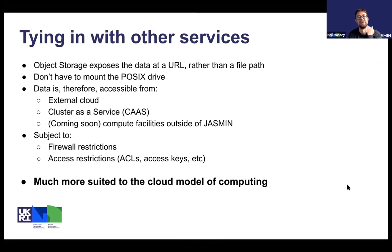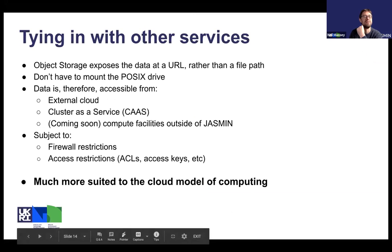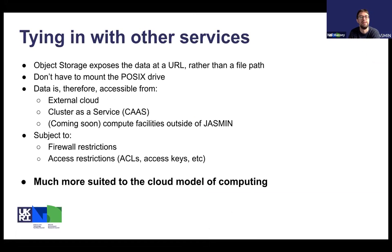As for how object storage ties in with other services: it exposes a data URL rather than a file path, so you don't have to mount drives on different servers. The data is accessible from the external cloud and cluster-as-a-service. Within the next few months, you should be able to access objects from compute facilities outside of Jasmine — subject to firewall restrictions, so your compute facility may need to be whitelisted — with access also controlled by access control lists, keys, and secret keys. The key takeaway is that object storage is much more suited to the cloud model of computing and will be used a lot more in the future.